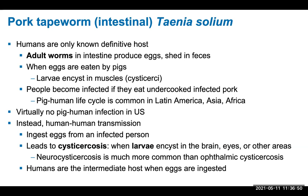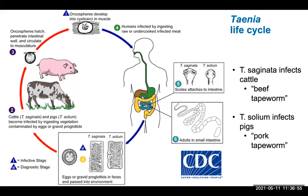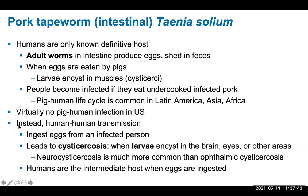The Taenia life cycle diagram shows the general cycle — humans ingest raw or undercooked infected meat with cysticerci, develop adult tapeworms in the small intestine, and shed eggs in proglottids that cattle or pigs then ingest. However, this diagram is missing the US human-to-human transmission cycle. You should make your own sketch including that portion, where eggs are ingested by a person and cysticerci develop within the human body — much more dangerous.